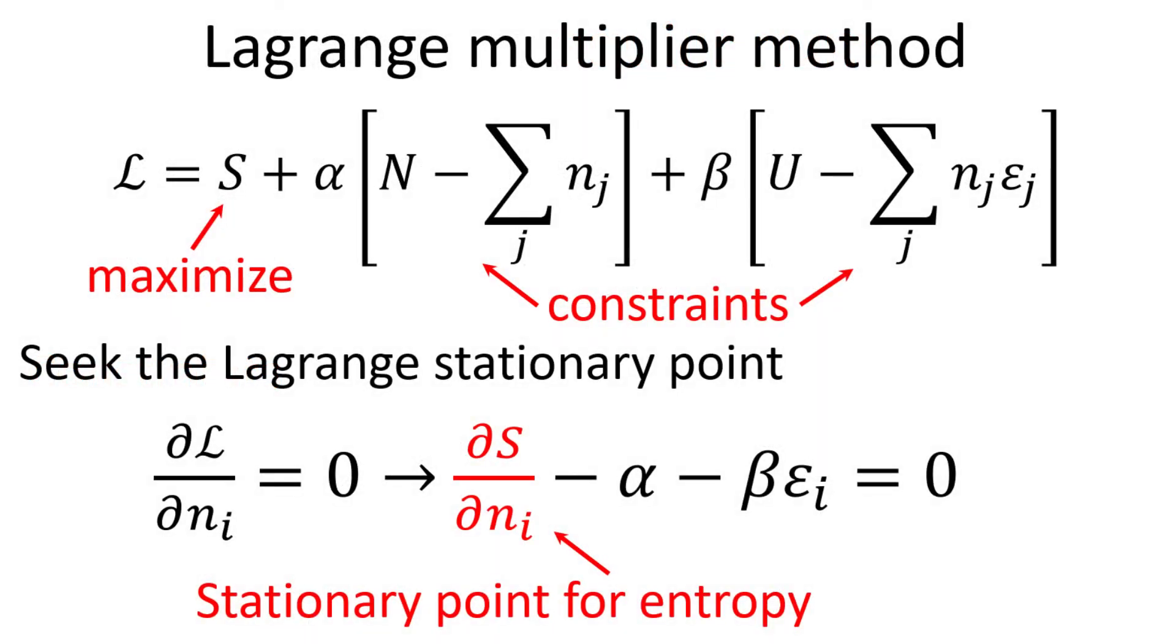To solve this trio of equations, we shall resort to the method of Lagrange multipliers. The method of Lagrange multipliers is a strategy for finding the local maxima and minima of a function subject to equality constraints.